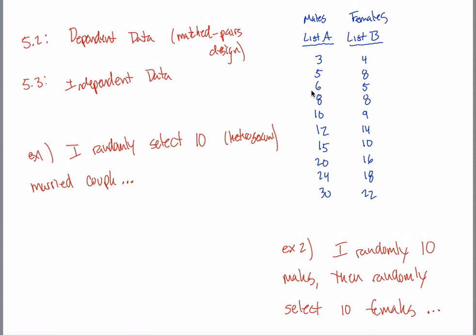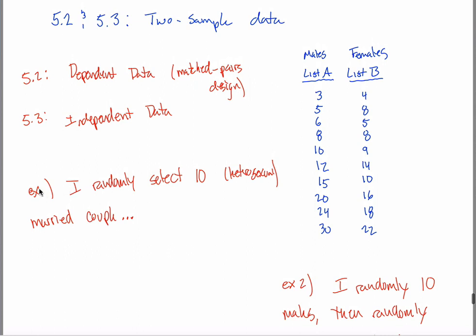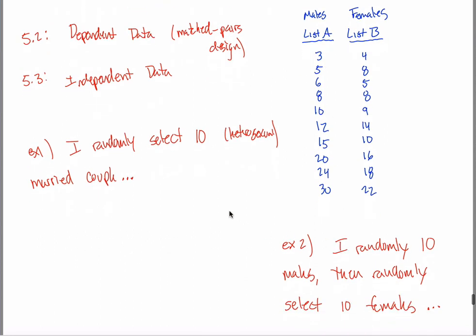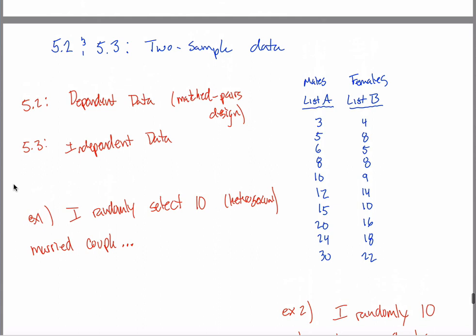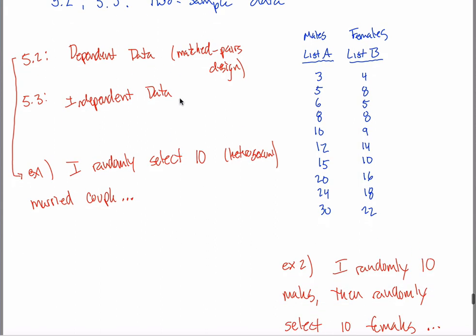So in this case, these are my 10 males, these are my 10 females. And importantly, there's no connection between the two lists. So in example one, these observations are connected, then I'll be able to do a given type of test. But if they're not connected at all, then I won't be able to do that type of test. Maybe I should give you the punchline at this point. 5.2, we see an example of it in example one here. And example two is an example of what we do in 5.3.